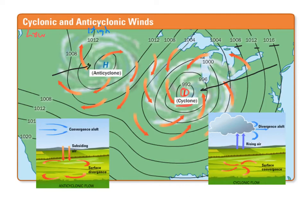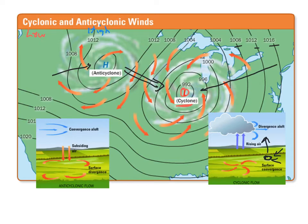Winds are going to traditionally blow from the high pressure system to a low pressure system. Let's look at what's going on in these environments. In a cyclone — a low pressure system — we have rising air, so it's going to be a little bit warmer. That rising air creates a gap down below, and that gap is going to be filled up by the surrounding air blowing in.